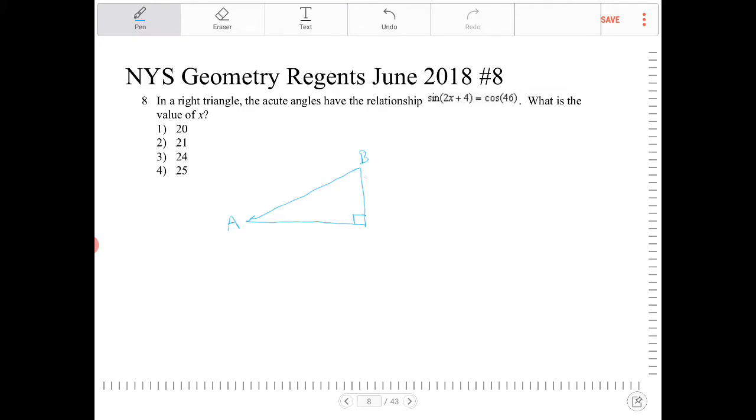Suppose I have a right triangle here, ABC. The opposite sides will have lowercase a, lowercase b, and lowercase c.